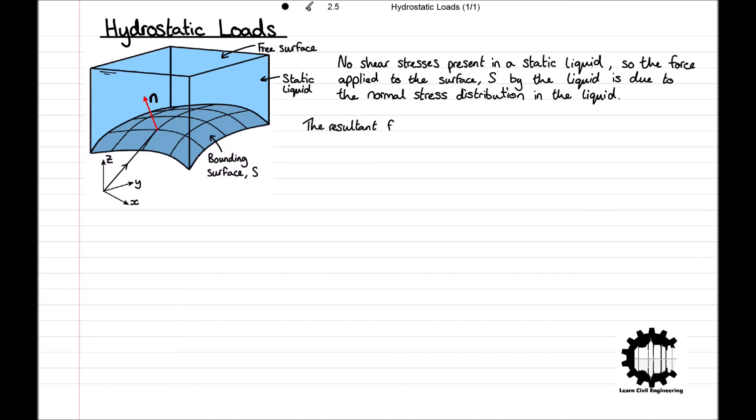The resultant force F, with the bold font denoting the fact that it's a vector quantity applied by the liquid to the surface, is given by F equals negative the surface integral of p times n with respect to A, where p is the hydrostatic pressure and n is the unit outward normal vector to the surface.